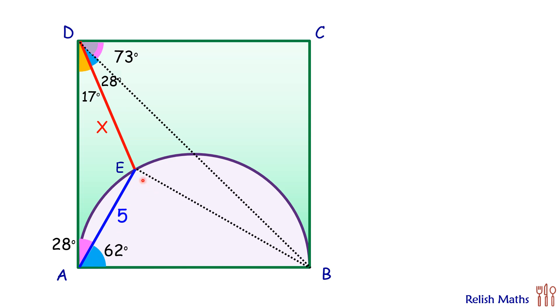Now this angle E is the angle subtended by the diameter of the circle, and thus this is 90 degrees. How about this angle? By angle sum property, we can say this angle is 28 degrees. And now again, this angle between the side and the diagonal is 45 degrees, thus this small angle which is left is 17 degrees.